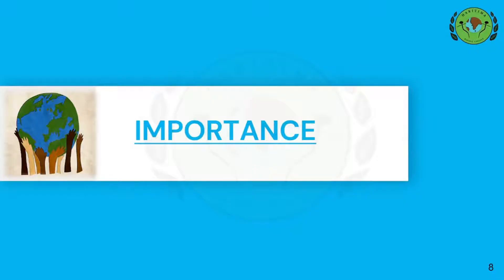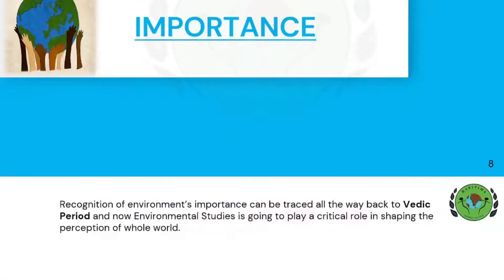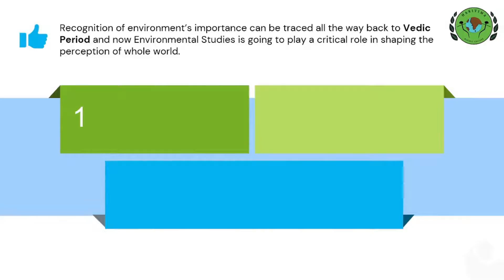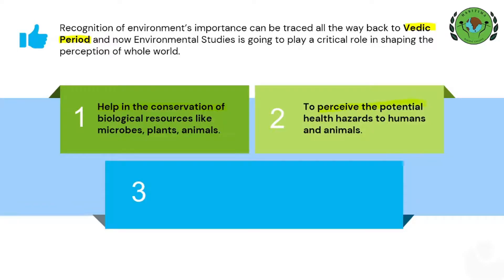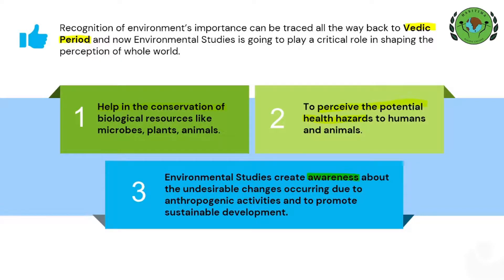After knowing the scope of environmental studies, let's see the importance of it. Recognition of environment's importance can be traced all the way back to the Vedic period, as there is mention of Agni, Vayu, Varsha etc. Environmental studies is going to play a critical role in shaping the perception of the whole world. First, environmental studies help in the conservation of biological resources like microbes, plants and animals. Second, it helps to perceive or identify potential health hazards to humans and animals. Third, it creates awareness about undesirable changes occurring due to anthropogenic activities and promotes sustainable development.